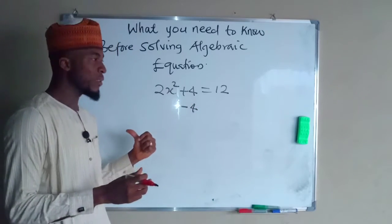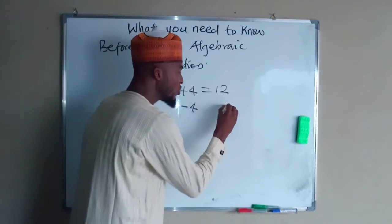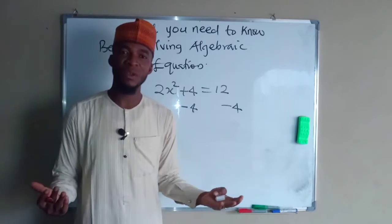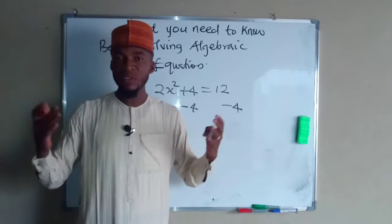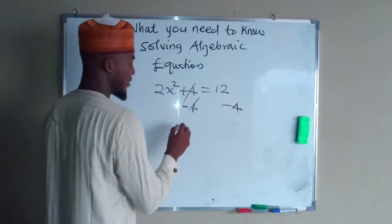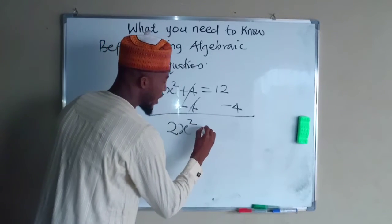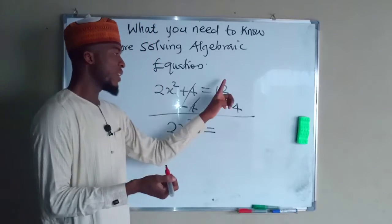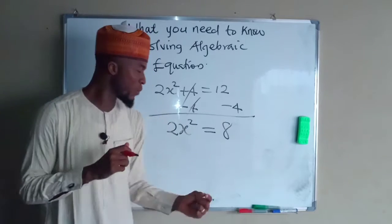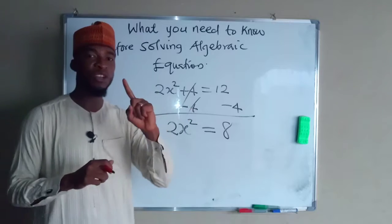But subtracting 4 from the left hand side alone will not keep the equation balanced — you have to subtract 4 from the other side as well, to do justice to both sides equally. This takes care of the 4 on the left. So on the left hand side we have only 2x squared, and on the right hand side we have 12 minus 4, which equals 8. What connects positive 2 and x squared is multiplication.